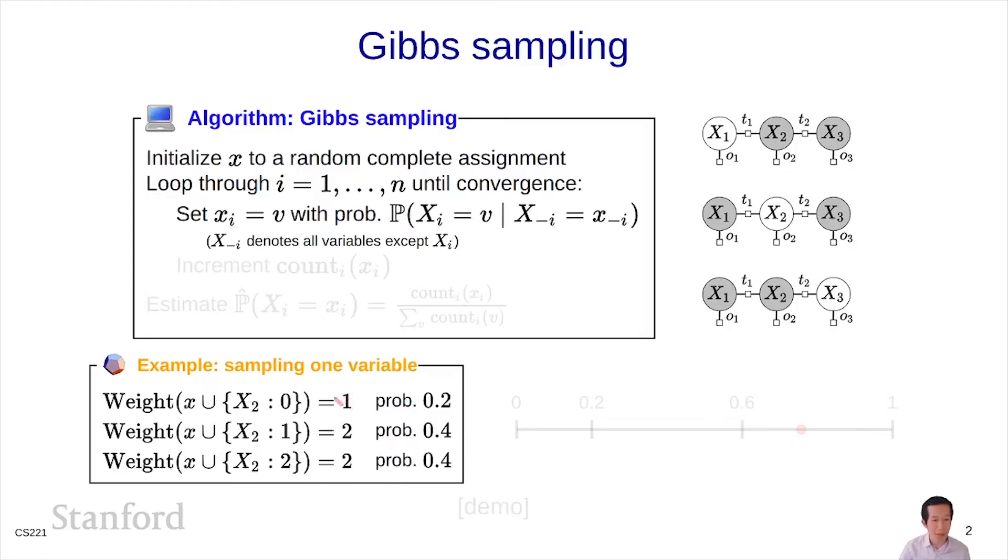Normalizing is summing these values, and I get 5, and dividing by 5 to get probability 0.2, 0.4, 0.4. And now I'm going to sample x2 equals one of these values according to this probability distribution.